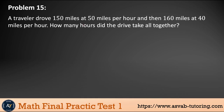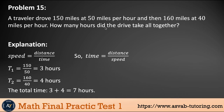Problem 15: A traveler drove 150 miles at 50 mph, then 160 miles at 40 mph. How many hours did the trip take in total? Time = distance ÷ speed. T1 = 150 ÷ 50 = 3 hours. T2 = 160 ÷ 40 = 4 hours. Total = 3 + 4 = 7 hours.